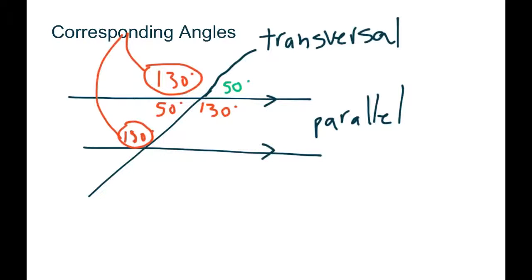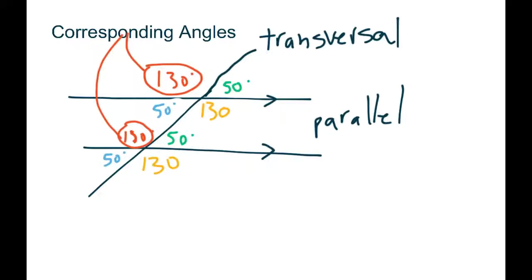Corresponding angles are the ones in the same position but at the different intersection. The top-left at the top corresponds to the 130 on the bottom; the 50 on the top corresponds to the 50 down below. The rule is: when you have two parallel lines, the corresponding angles are also equal.